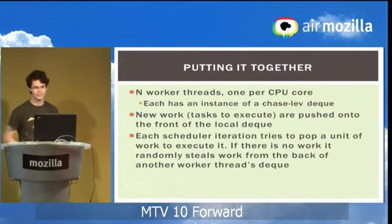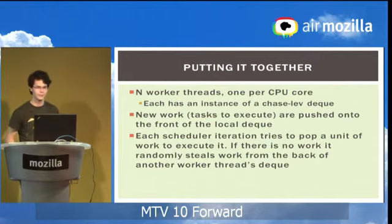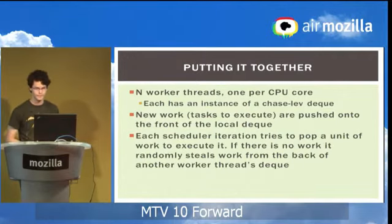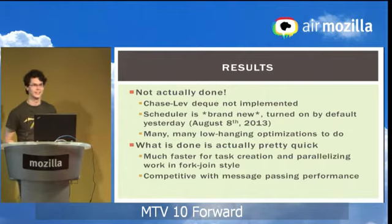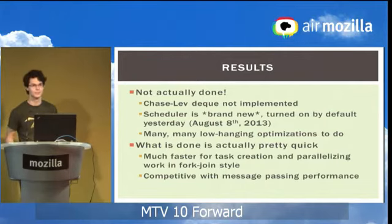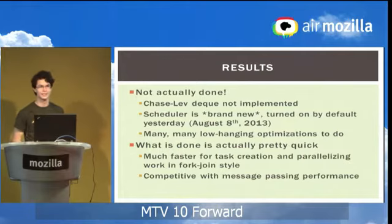So now we've got all the bits assembled together. We've got N worker threads, one per CPU core, and then a Chase-Lev deque for every single worker thread. Whenever you make new work, you push it onto your local Chase-Lev deque. Whenever you need to do work, you dequeue it locally. If there's no work to do locally, you steal from a random other scheduler's Chase-Lev deque on the other side. The Rust implementation — the first thing to note is it's not actually done yet. The work stealing part is there, and the Rust scheduler is pretty much all working in Rust. We turned it on by default yesterday, which was pretty exciting. But the Chase-Lev deque is currently not in use, so we're missing that big part — it should be a big speedup when we implement it. There are also a lot of other simple optimizations we can do.